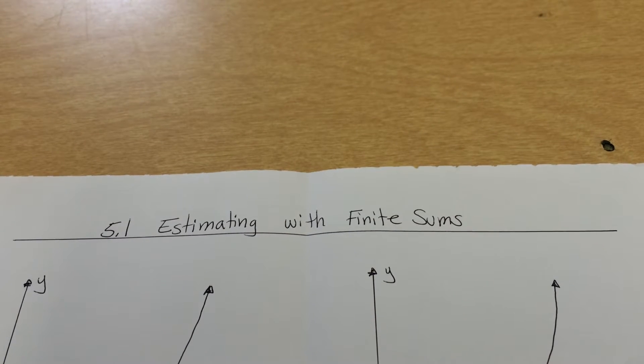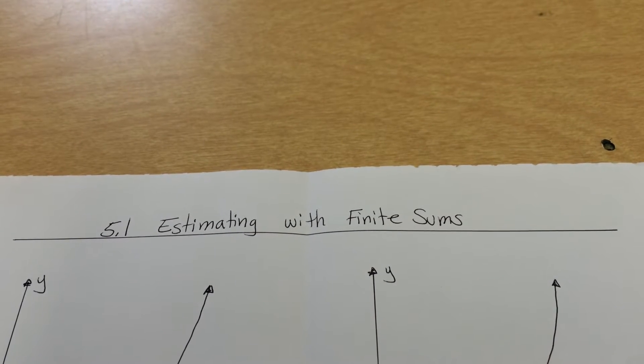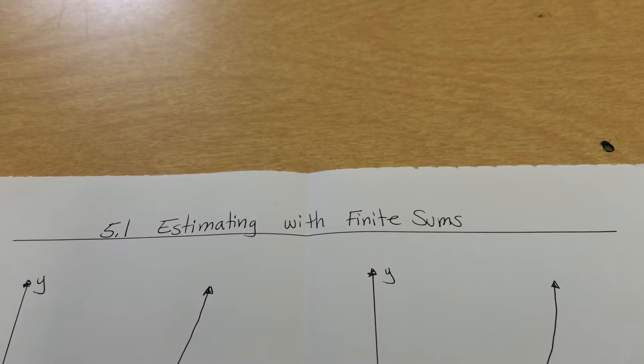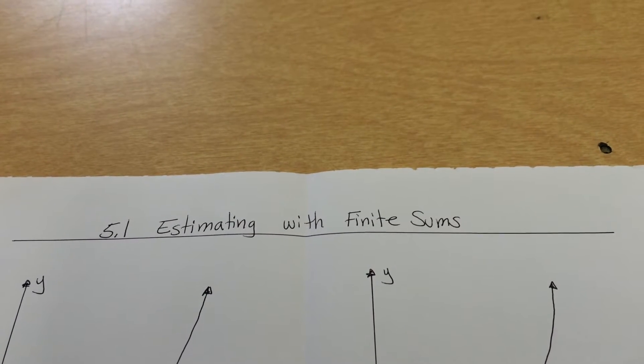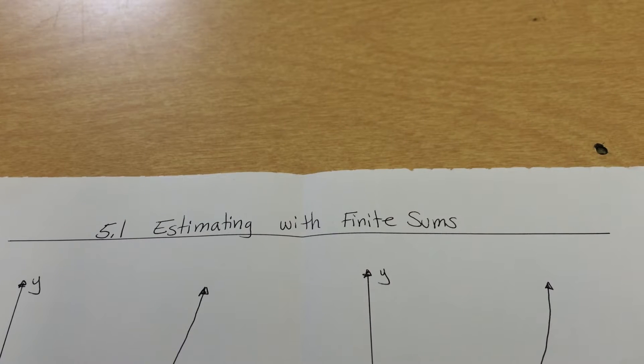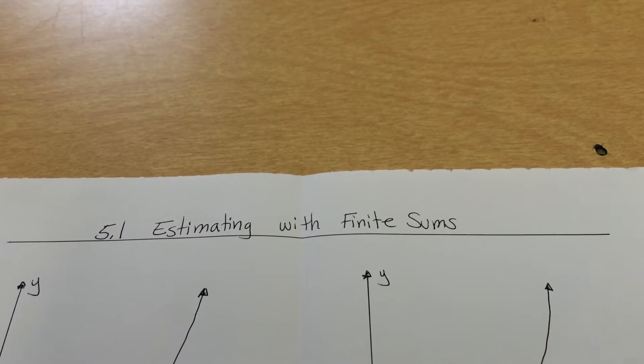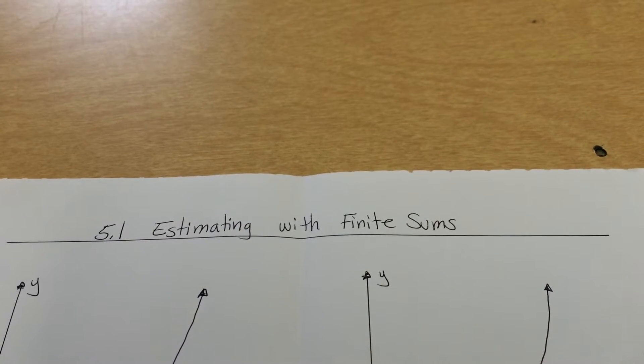This section is called 5.1, Estimate of Finite Sums. So what we're trying to do now is finding the area under the curve. Starting from Chapter 5 on, we're going to find the area.